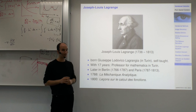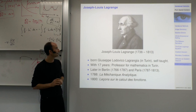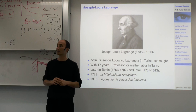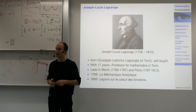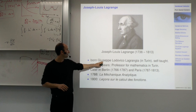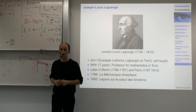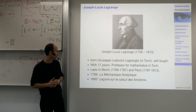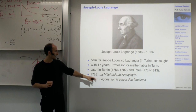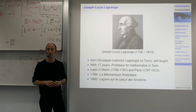Lagrange is another very influential character in mathematics. Despite the name, he was not French but Italian, born in Turin, self-taught, with French ancestry — he changed his name from Giuseppe Lodovico Lagrangia to Joseph-Louis Lagrange. He was a professor in Turin, later moved to Berlin and then Paris, and published influential books including La Mécanique Analytique and Leçons sur le calcul des fonctions, where the Euler-Lagrange calculus is developed.